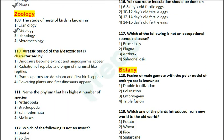Question number 110: The Jurassic period of the Mesozoic era is characterized by — option 1: dinosaurs become extinct and angiosperms appear; option 2: radiation of reptiles and origin of mammal-like reptiles; option 3: gymnosperms are dominant and first birds appear; option 4: flowering plants and first dinosaurs appear. The correct answer is option 3 — gymnosperms are dominant and the first birds appear.